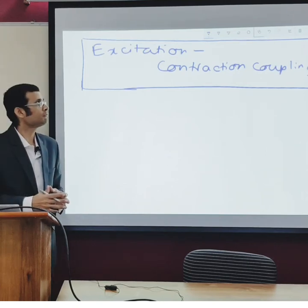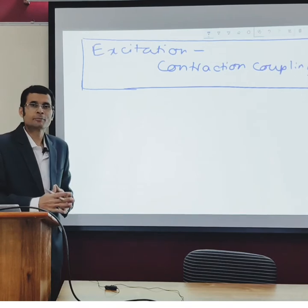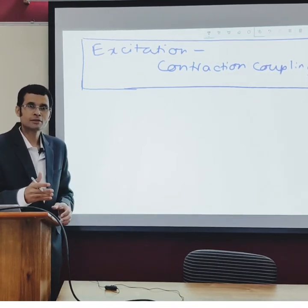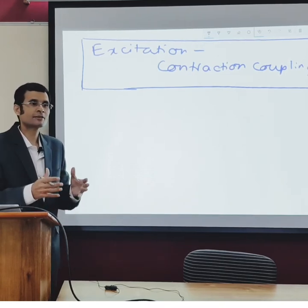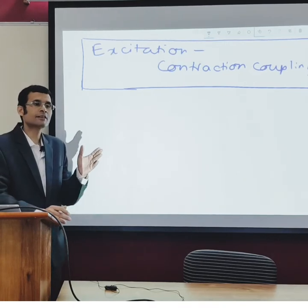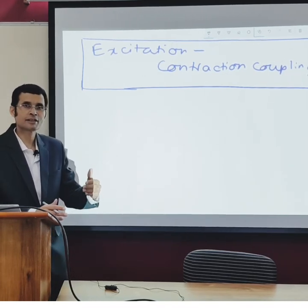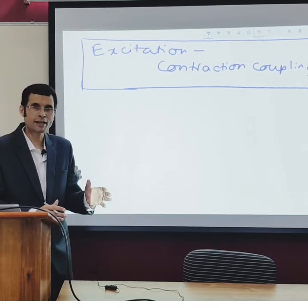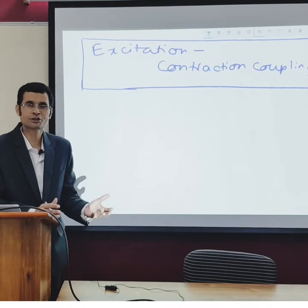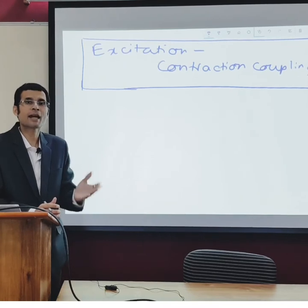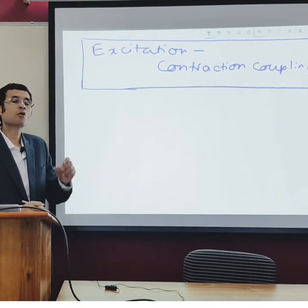Let's understand the concept of excitation-contraction coupling in skeletal and cardiac muscle. The electrical excitation of the muscle leads to contraction, which is a mechanical event. These two different types of events have been coupled — hence the term excitation-contraction coupling. The electrical excitation travels through the nerve as an impulse, enters the muscle, and leads to the mechanical contraction, which is the actin-myosin interaction.